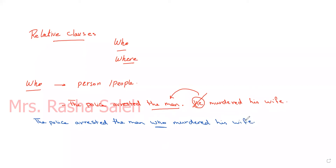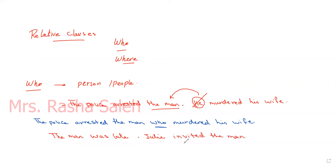Let's see another example. 'The man was late.' and 'Julie invited the man.' To use 'who', the result is: 'The man who Julie invited was late.'